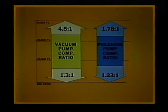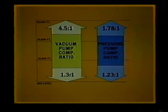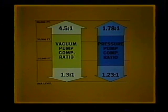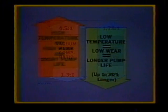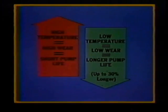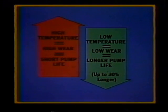Using the same pump, but as a pressure pump instead of a vacuum pump, its compression ratio at sea level is 1.23 to 1, as compared to 1.78 to 1 at 30,000 feet. In short, the lower compression ratio of a pump, the lower its operating temperature and wear factor. Based on this, pressure pumps at altitudes above 15,000 feet will last up to 30% longer.